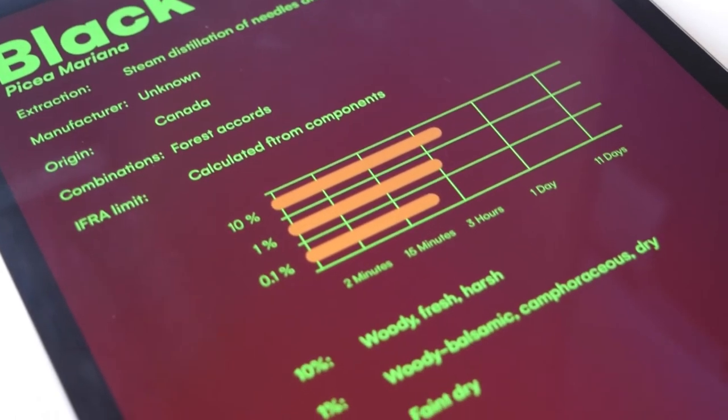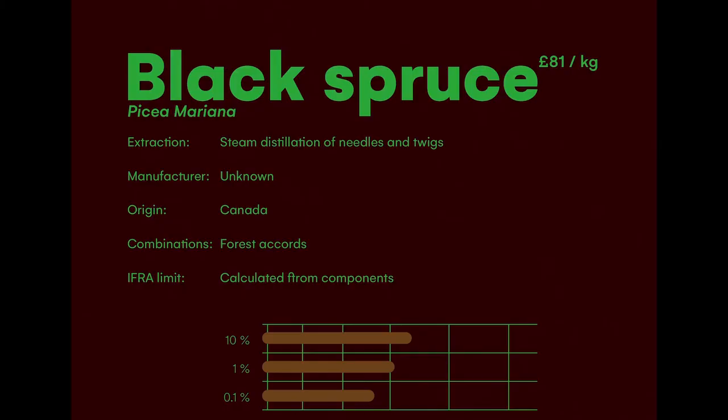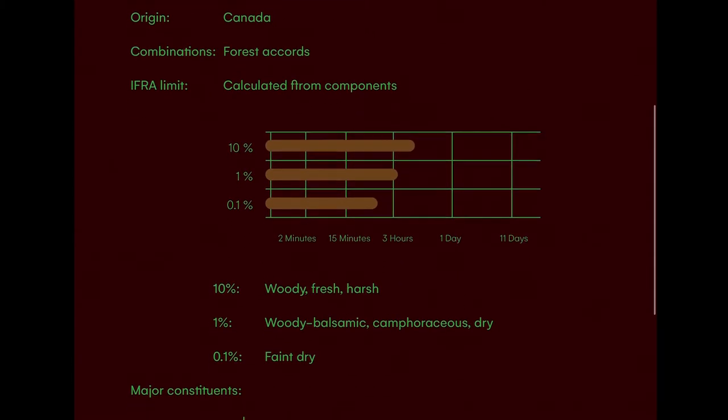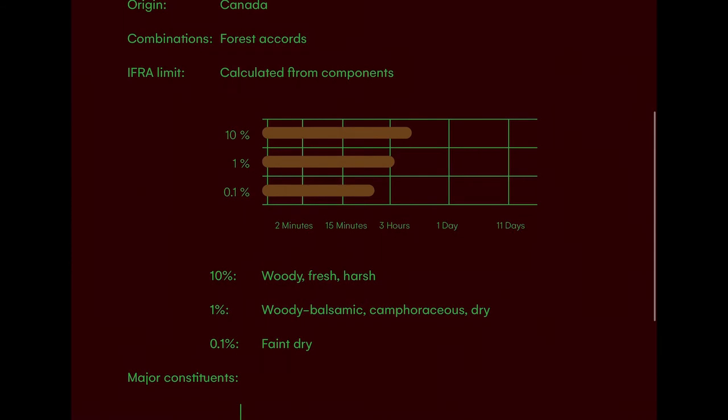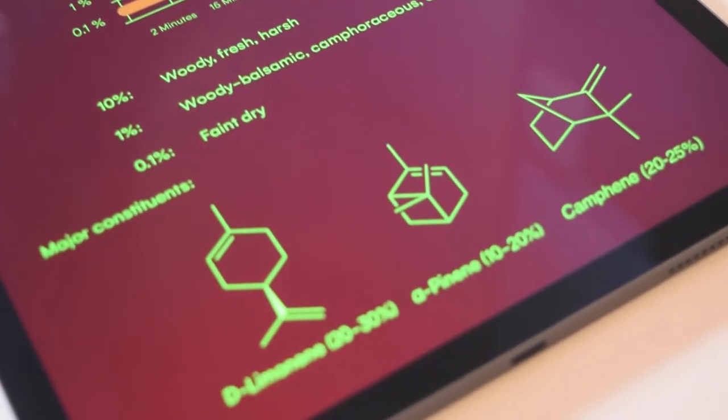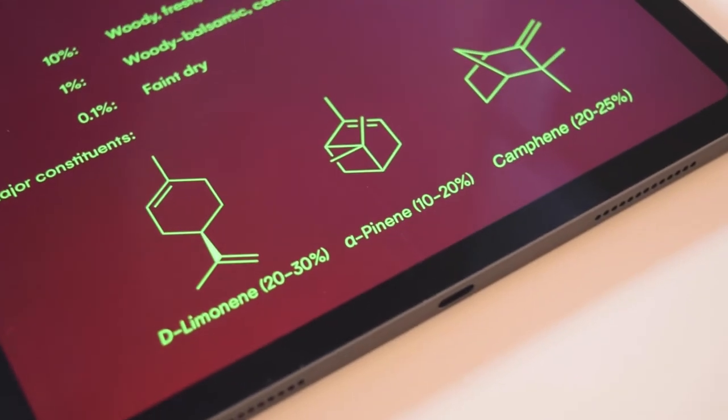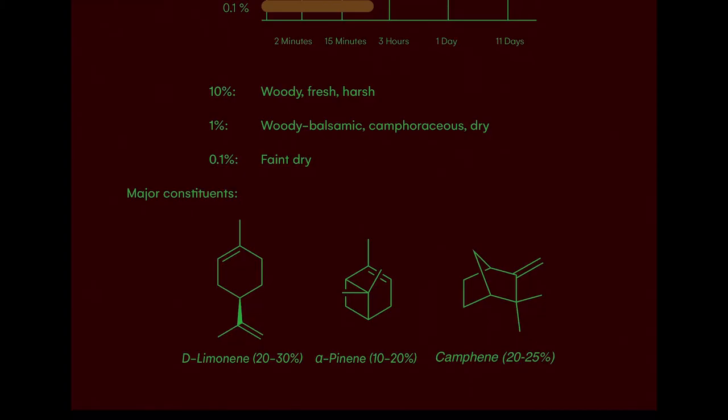It lasted, I would say, about the time of a top to mid note, so about three hours on the scent strip. I have read that it can be used in pine accords or forest accords, and also is quite commonly used in household products. As for the constituents, we have limonene, alpha-pinene, and camphene, all of which are really quite common terpenes, so nothing too surprising there.